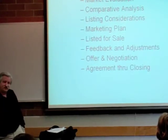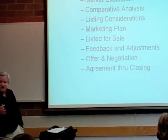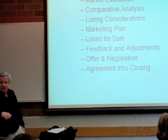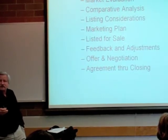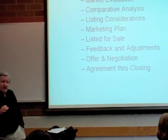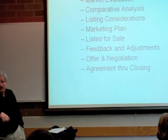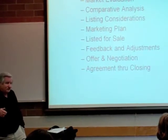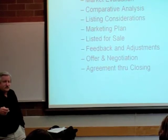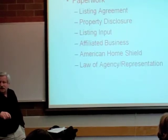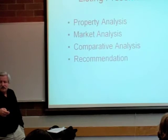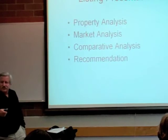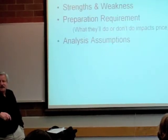All right. What the process is, I don't have to tell you folks what this is. Go through the market evaluation phase. Comparative analysis, which is different, which we'll talk about. Listing considerations. If it's got two lots, we're going to market it with or without the second lot. That sort of thing. Get a marketing plan based on marketing strategy for that property, not some generic one. Get it listed for sale. Listen to the feedback and make adjustments. Go through the offer and negotiation and hopefully bring you through closing. Okay, so that was the first step. The next step then is to come back and go through the property analysis.